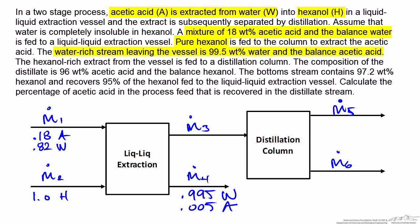The hexanol-rich extract leaving the extraction column is fed to the distillation column. No composition information is provided for this stream, so we label m3 with an unknown composition variable. The mass fraction of hexanol is labeled arbitrarily as x, and since there's no water in this stream, the mass fraction of acetic acid must be 1-x.